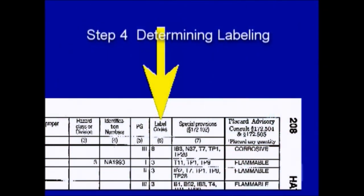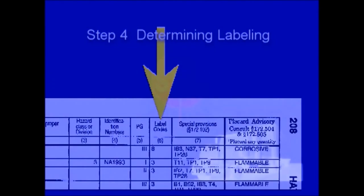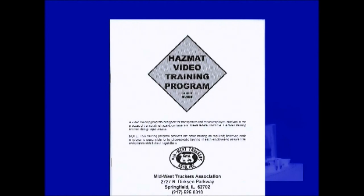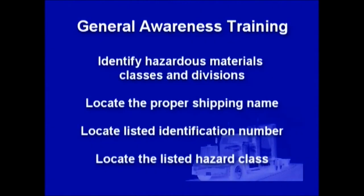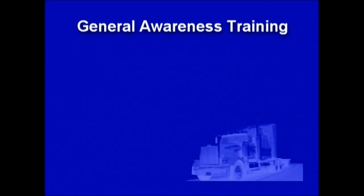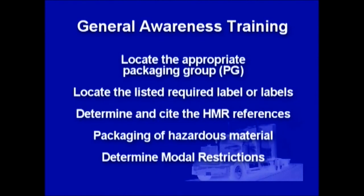As we go through this course, the visual on your screen will show the main idea that will be explained. At key points, you will be instructed to stop the video so that you may take one of the tests in your student manual. Let's get started with Lesson 1, General Awareness Training. By the end of this lesson, you should be able to identify hazardous material classes and divisions and the associated placards; locate the proper shipping name in the hazardous materials table; locate the listed identification number, hazard class or division, and appropriate packing group; locate the listed required labels; determine and cite the HMR references for special provisions and correct packaging; and determine modal restrictions, if any.